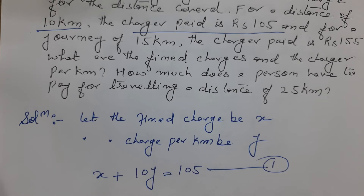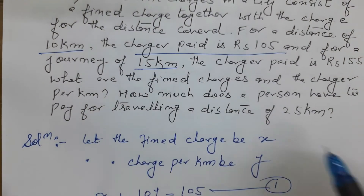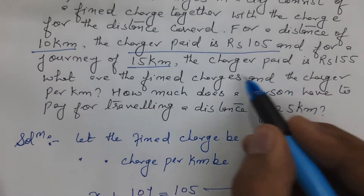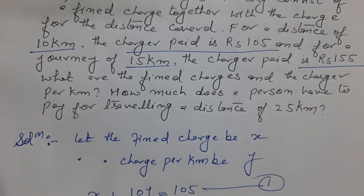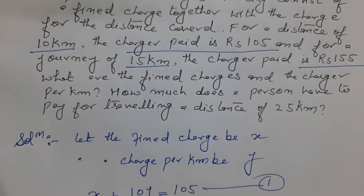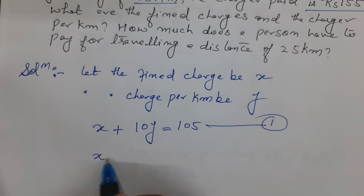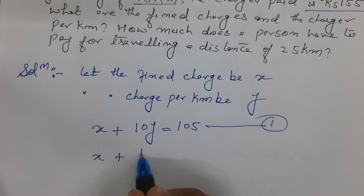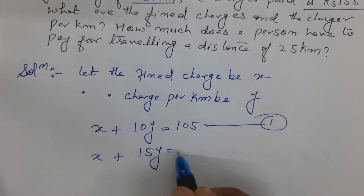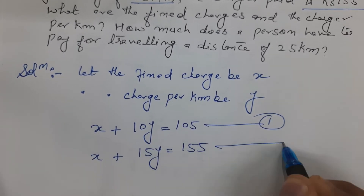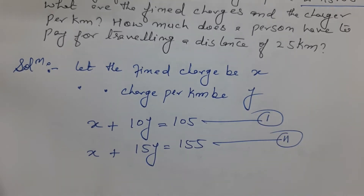Similarly, for a journey of 15 km, the charge paid is 155 rupees. So our second equation is: x plus 15y equals 155.